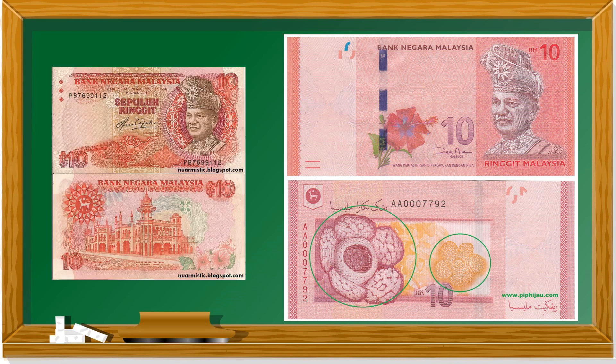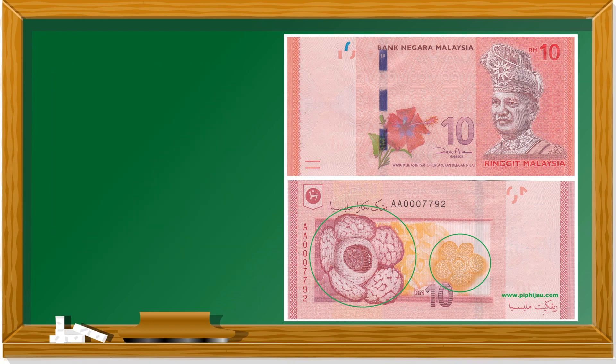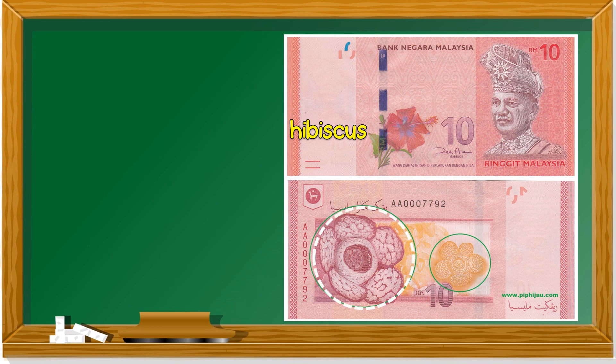This is the old ten ringgit note, and on the right side is the new note. We look at the new ten ringgit note. What color is it? It's red. In front, you can see the hibiscus. At the back, this is also a flower - it's called rafflesia. So this is the ten ringgit note.